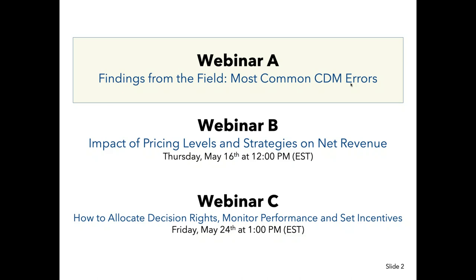In addition, we will be hosting one called the Impact of Pricing Levels and Strategies on Net Revenue. This will review topics such as charging for supplies, handling Medicare co-pays, budget coding, and documentation. And finally, our last webinar will be How to Allocate Decision Rights, Monitor Performance and Set Incentives. This will focus on how to develop systems for accountability and transparency with an emphasis on establishing pricing accountability and charge master integrity throughout your hospital.